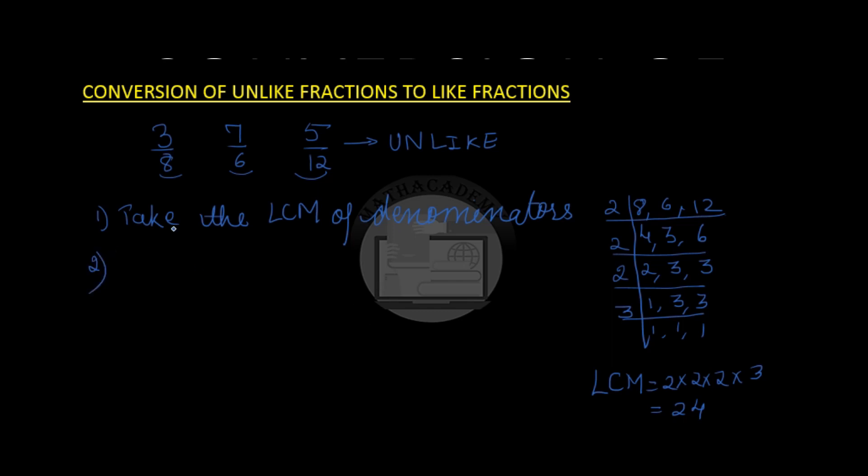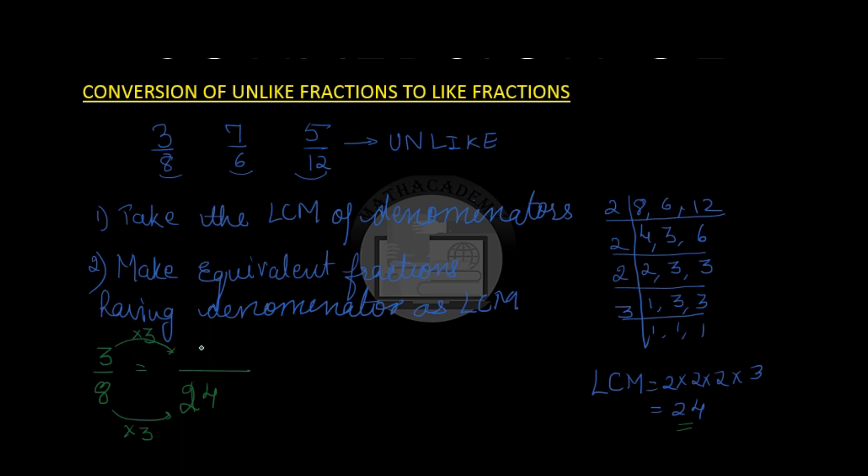Second step is make equivalent fraction having denominator as the LCM. Let us see what does this mean. So our first fraction here is 3 over 8. We have to form an equivalent fraction of 3 over 8 such that the denominator is 24. We know that 8 when multiplied by 3 gives 24, so the numerator should also be multiplied by 3. Then we get the equivalent of 3 by 8 as 9 over 24.